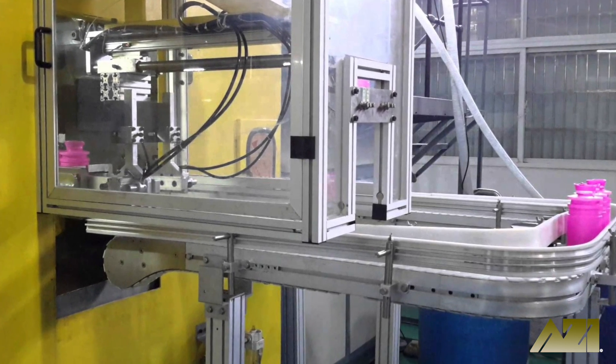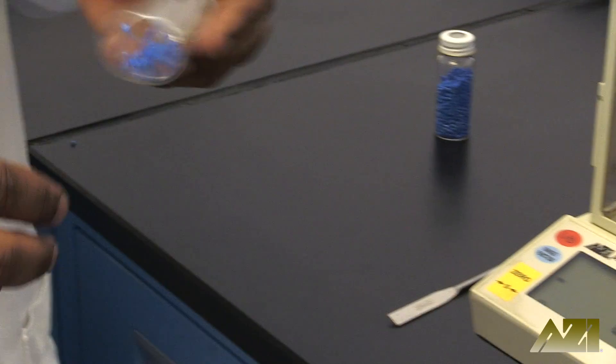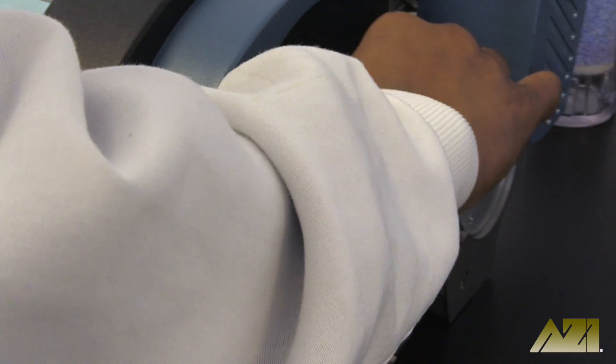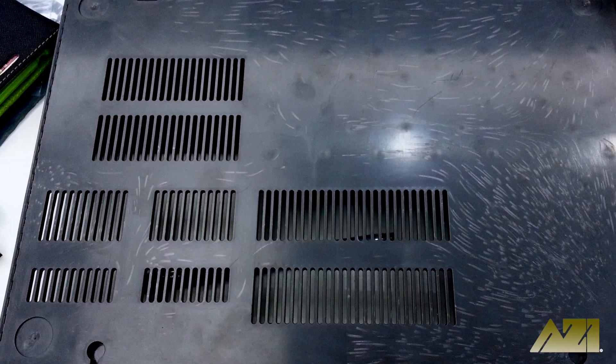But before it can get melted, the pellets themselves have to be tested for moisture content. Too much moisture in the pellets can cause runniness and splay, making the end product come out with streaks or other blemishes.